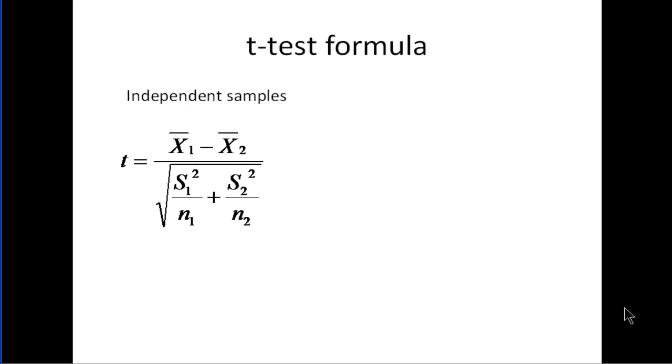And you can see in the numerator, there's the difference between the two means. And then the denominator is the standard error of the difference between two means. And in that denominator portion, you have the variance for group one and you have the variance for group two.